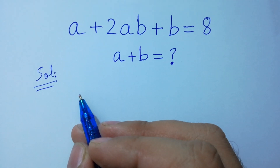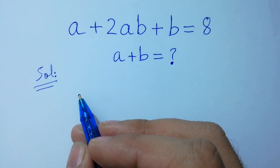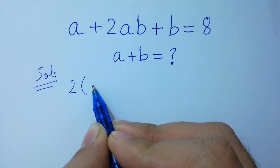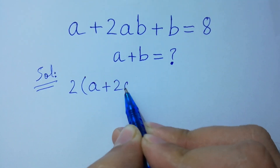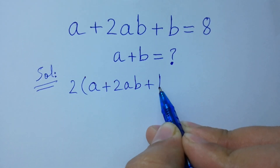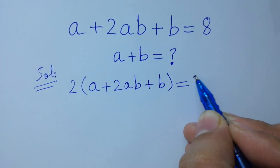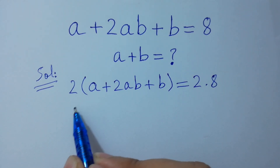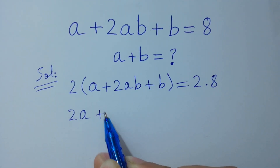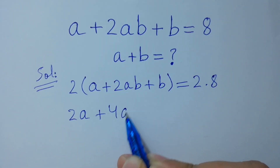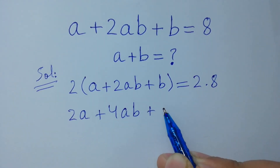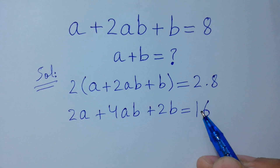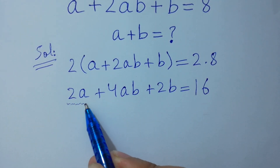To solve this, first multiply both sides by 2: 2a plus 4ab plus 2b is equal to 2 times 8, which is 16.